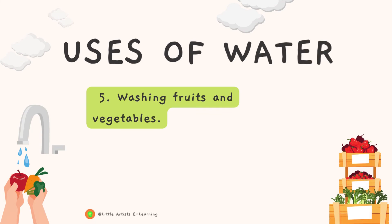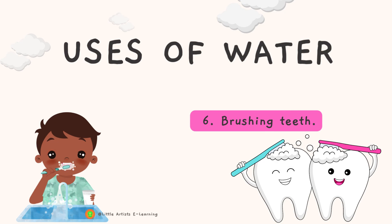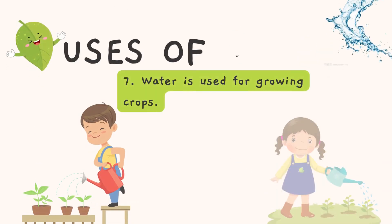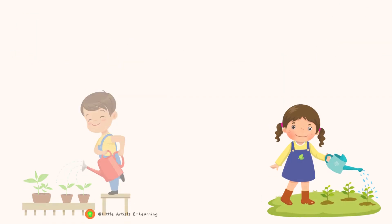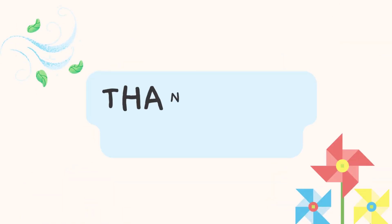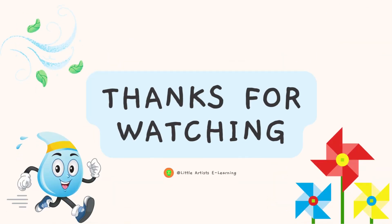Number six, brushing teeth. Number seven, water is used for growing crops.